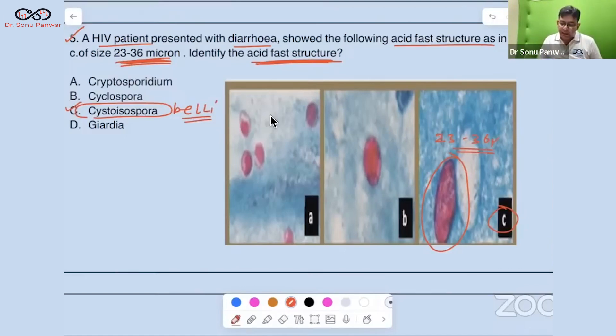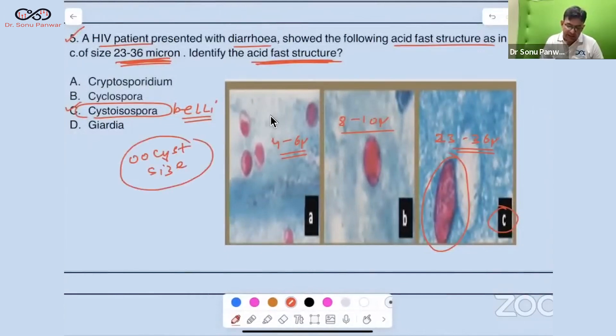And this is having 8 to 10 micron, some are telling 8 to 12 also. And it is 4 to 6 micron for the Cryptosporidium. And what is the size we are talking about? We are talking about the oocyst size. These oocyst sizes we are telling.